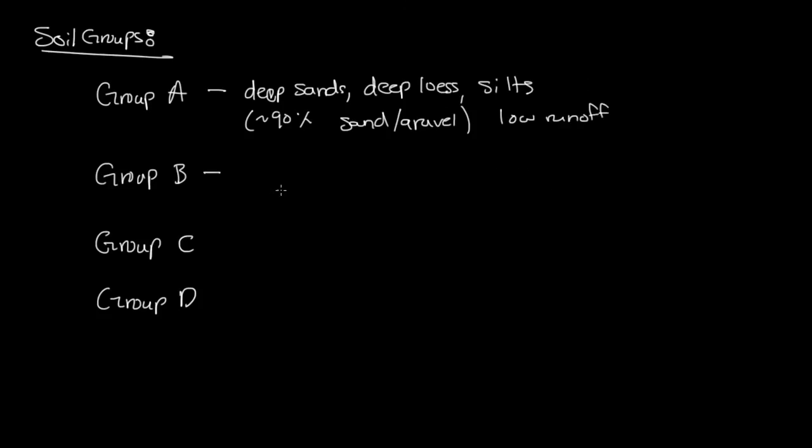Group B soils consist of shallow loess and sandy loams. Group B still has a majority of sand and gravel, but not as much as group A. Group B has moderately low runoff.